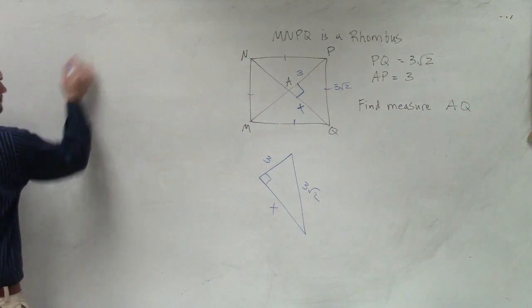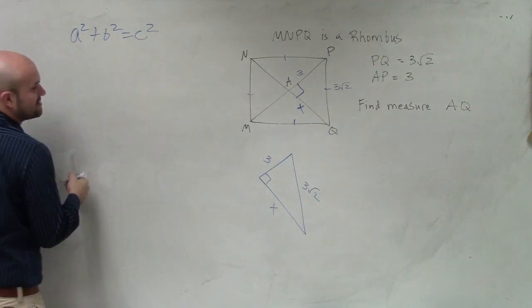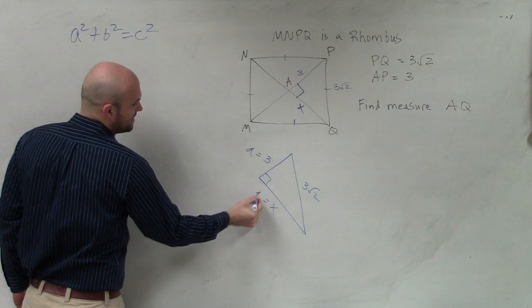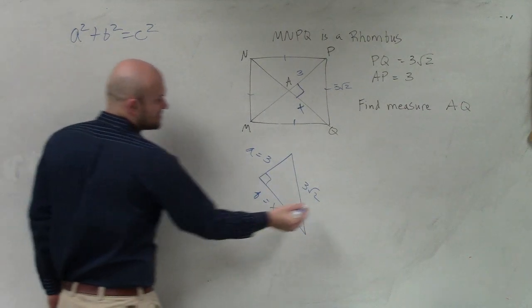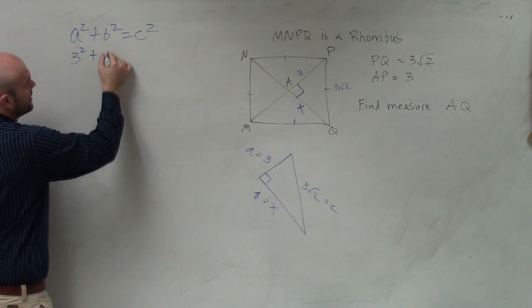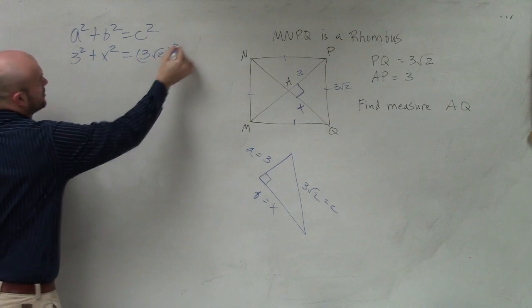So remember, in this case, Pythagorean theorem is A squared plus B squared equals C squared. Well, here, we'll call that. These are your A's and your B's. Those are your two legs. And that's going to equal your C. So I can say 3 squared plus x squared equals 3 square root of 2 squared.